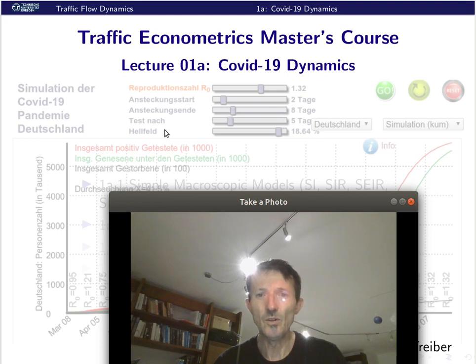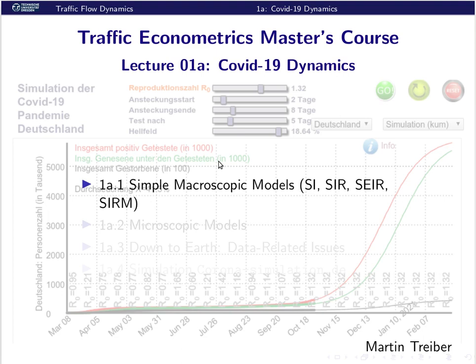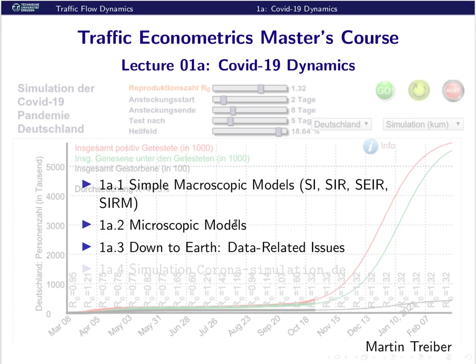Let's give an overview. First, we will learn some simple macroscopic models, particularly the SI model, which we know already from the first lecture - it's nothing else than the model for limited growth in another form, specialized to infection dynamics. Then we will go to microscopic models briefly, where every single person is seen as a particle. Then we will go down to earth to econometrics and all the data-related issues, and there are really many of them.